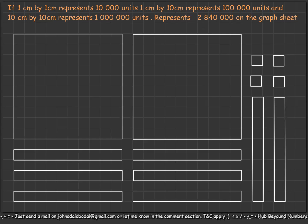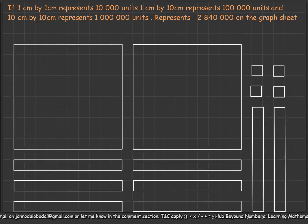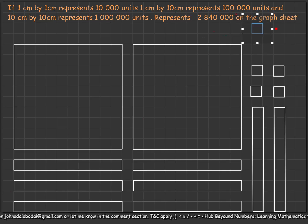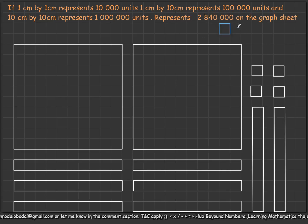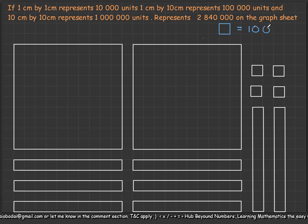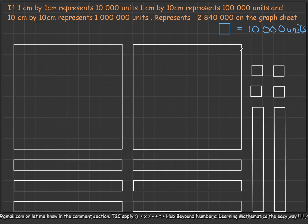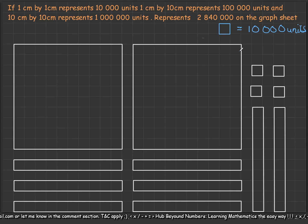Take note — you must write out your scale key. Up here I'll place one of the small squares and indicate that one one-by-one centimeter equals ten thousand units. You need to put that there so that anyone reading your graph can interpret it without having to read the question. This is the graphical presentation of two million, eight hundred and forty thousand based on the scale given.